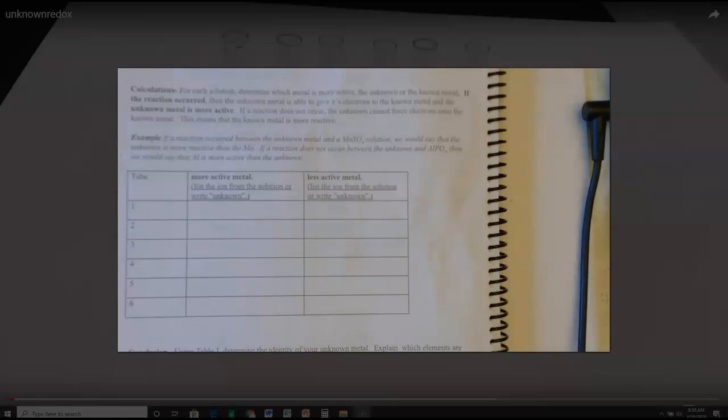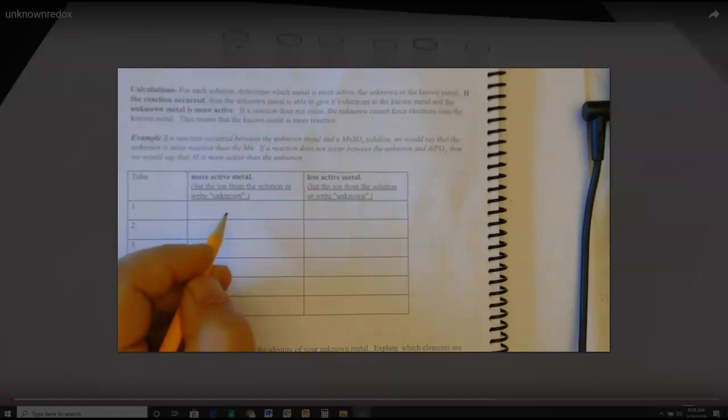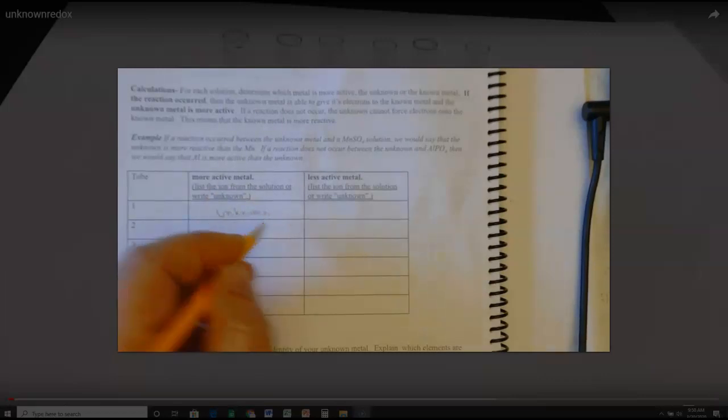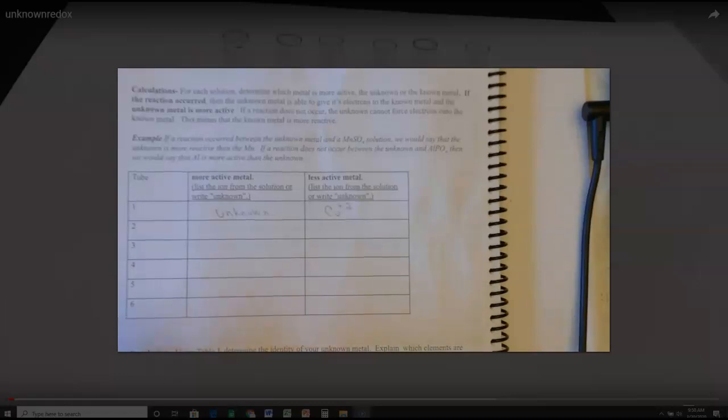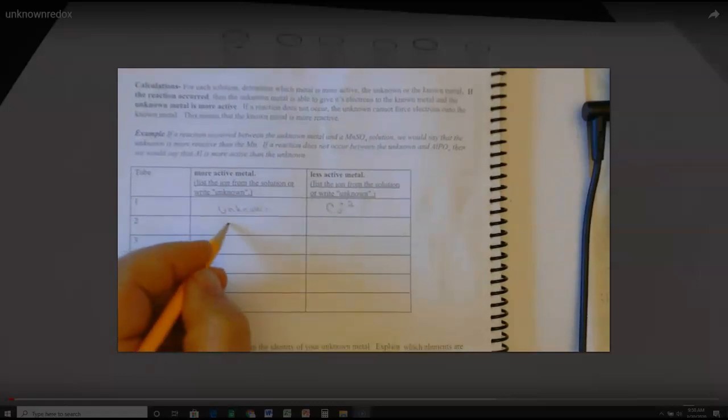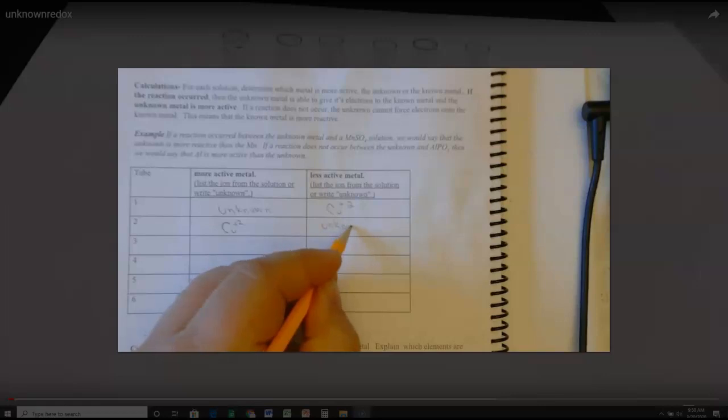The other part of the lab is we're going to interpret what we saw. What we're going to do now is write down from tube one to three, four, and five. We're going to write down which was the more active metal. Did the unknown give electrons to the metal in solution? If it did, let's pretend it did. Let's pretend that when we put the unknown in copper, we saw a reaction. The more active metal would be the unknown, and the less reactive would be copper plus two. If the reaction didn't occur with the copper solution, we would say that the copper plus two is more reactive, and the unknown is less reactive.